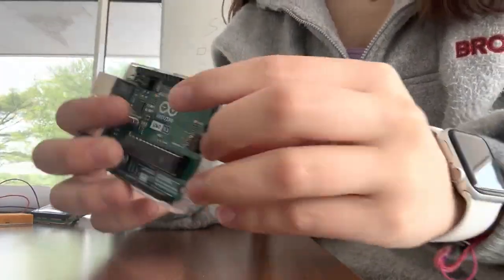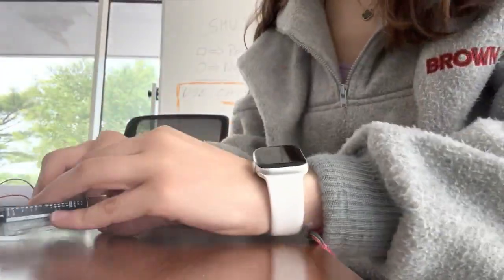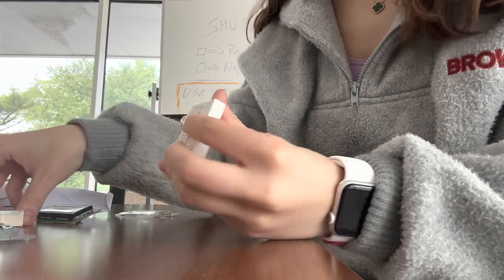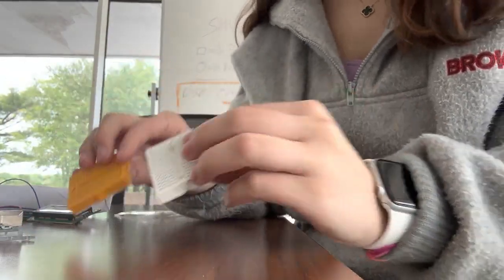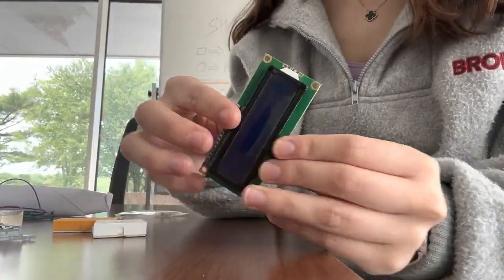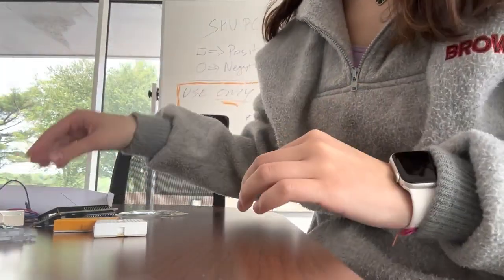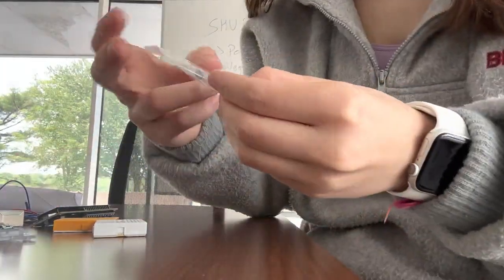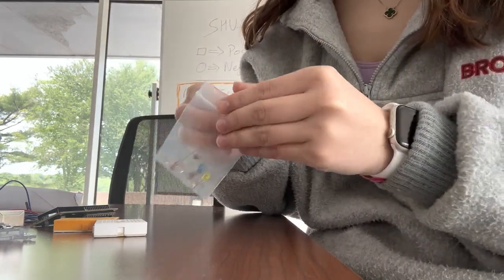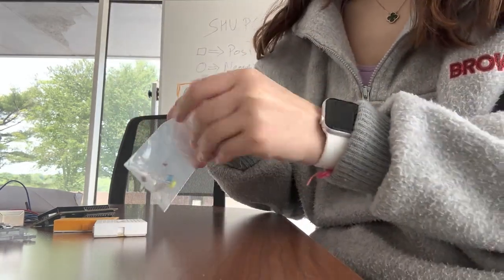What you're going to need is your Arduino Uno board circuit, your two breadboards, a screen, and a handful of wires, and then your LED, your two resistors, and one photoresistor.